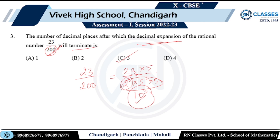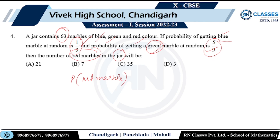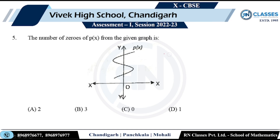A jar has 63 marbles of blue, green, and red. Probability of blue is 1/3, probability of green is 5/9. Find the number of red marbles. Since probabilities must sum to 1: P(red) = 1 − 1/3 − 5/9 = 1/9. With 63 total marbles, if x is the number of red marbles, then x/63 = 1/9, giving x = 7. Option B is correct.